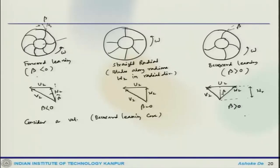Let us continue the discussion of the different blade arrangements in centrifugal compressor. What we have looked at so far is the different equation system and then when you have different kinds of rotor blade configuration. This is where we stopped the discussion in the last lecture, where we have different kinds of arrangement: forward leaning, straight, or backward leaning.